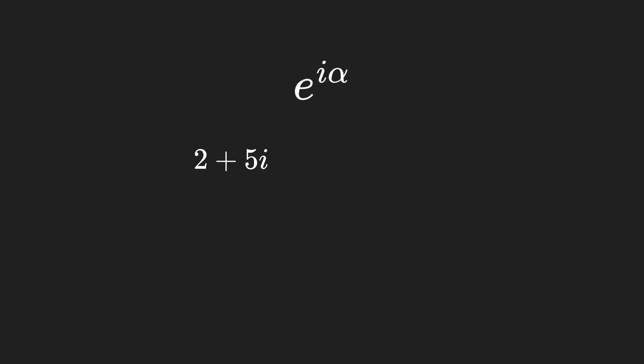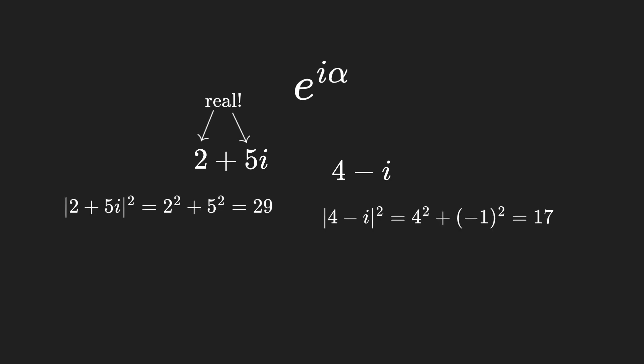What if I told you that Shor's algorithm essentially boils down to complex exponentials? You don't really need to understand how complex numbers work in detail or what even a complex exponential is. Just keep in mind that a complex number can be seen as a pair of real numbers, and its modulo-square operation is the sum of the squares of both real numbers. For the sake of this video, you just need to know that the modulo-square of a complex exponential is always 1.